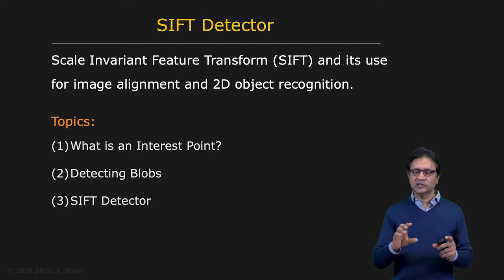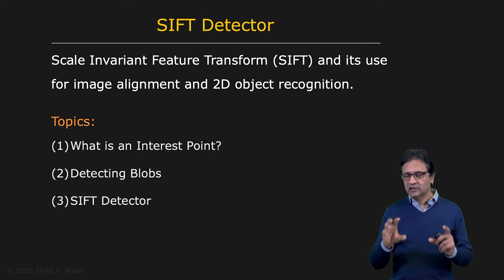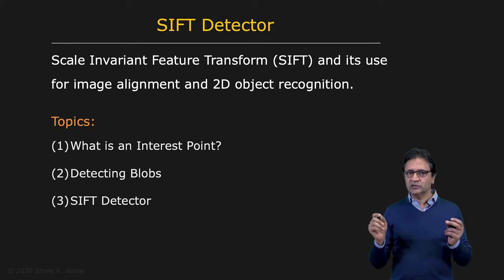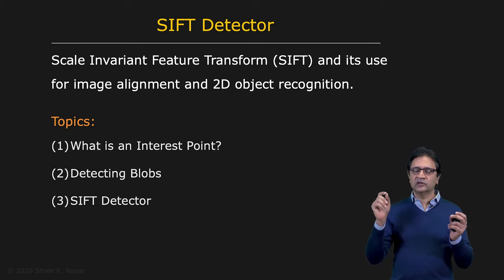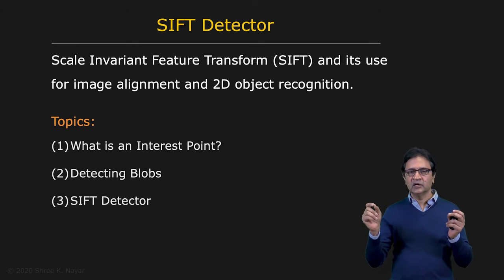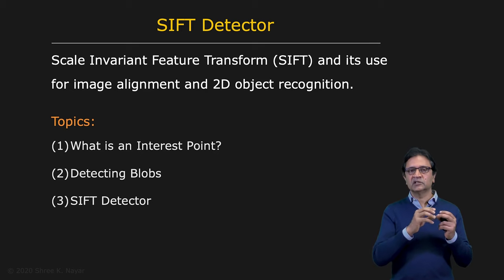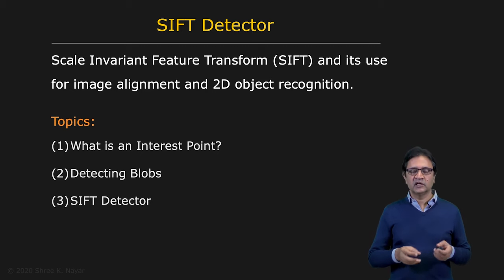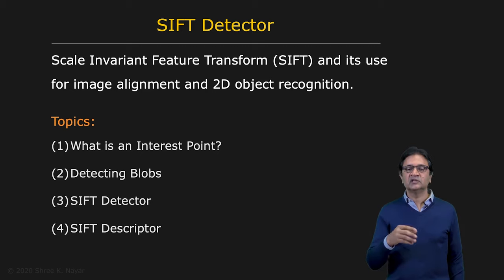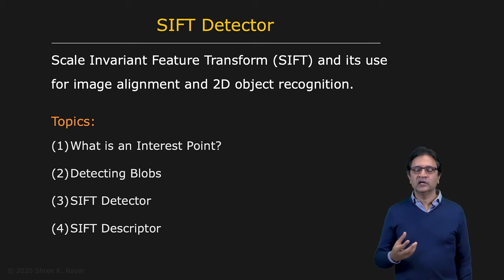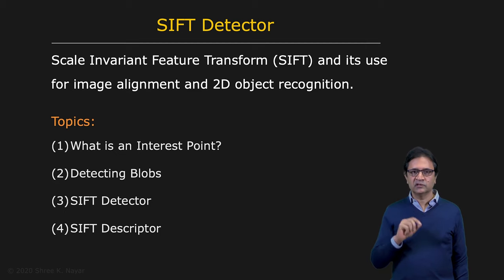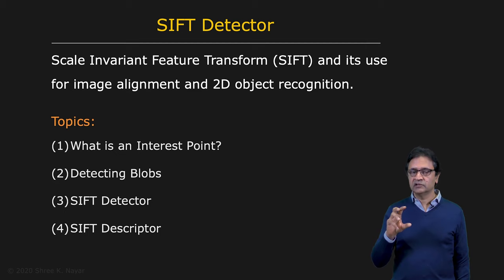Now that brings us to the point where we can actually detect these interest points in any given image. But in order to match a point in one image to a point in another image, you really need some kind of a signature that describes the local appearance around the point. So that brings us to the SIFT descriptor. We'll see how we can extract such a description or signature from each one of these blobs, and how to make that signature independent of rotation, scale, and insensitive to things like lighting.